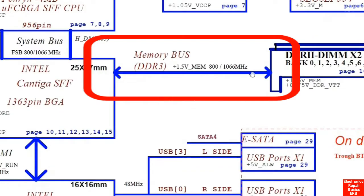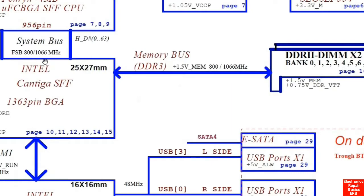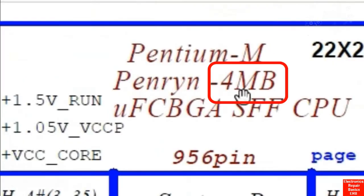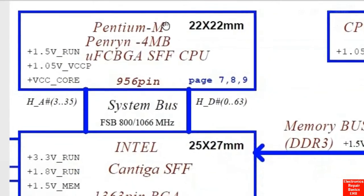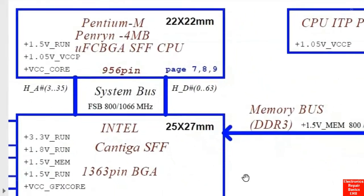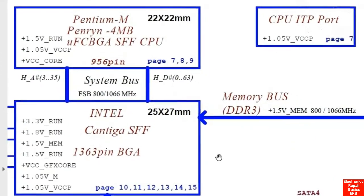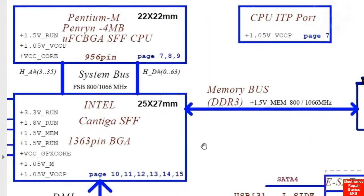Here is another bus — the memory bus — which connects the GMC hatch or north bridge to the RAM, shown here as DDR2. It runs at about 800–1066 MHz, the same frequency as the FSB bus. This processor also contains 4 megabytes of cache memory. If you understand this block diagram you can understand any laptop diagram.